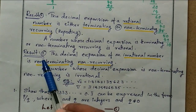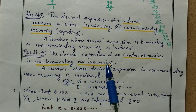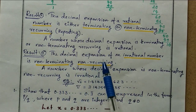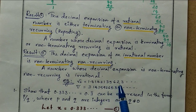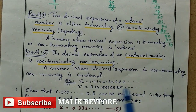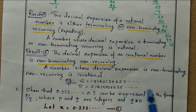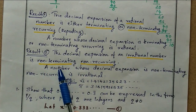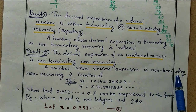Similarly, result number two: the decimal expansion of an irrational number is non-terminating non-recurring, meaning it does not end with one number and it does not repeat. For example, root 2 is 1.41421356... — it is not terminating and not recurring. Pi is 3.14159265... — these two numbers are irrational. So a number whose decimal expansion is non-terminating non-recurring is irrational.